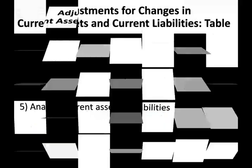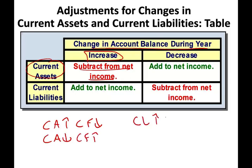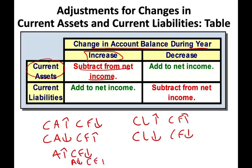The same concept applies to accounts payable, wages payable, and all current liabilities: when liabilities go up, it's good for cash — you're not using cash. Current liabilities up → cash flow up; current liabilities down → cash flow down. In fact, this applies to all assets and all liabilities, not just current ones.